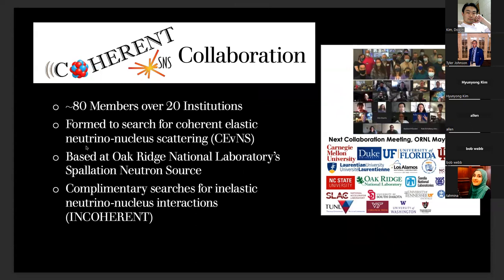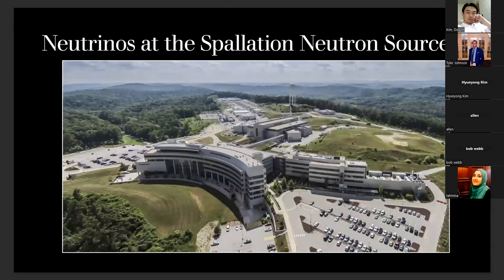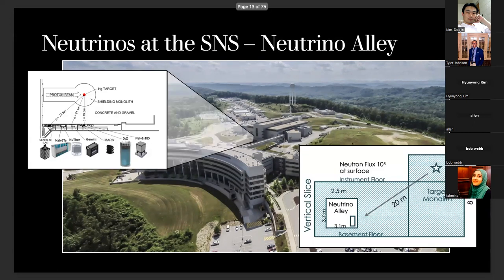So I am a representative of the Coherent Collaboration. We are about 80 members spanning 20 institutions around the world. It was formed specifically to look for CEvNS, as the name would suggest. We're largely based at Oak Ridge National Lab, specifically the Spallation Neutron Source for its neutrinos. There is this emerging wing of the collaboration that is looking for inelastic neutrino nucleus scattering, what we call incoherent, and this is where the majority of my work actually happens.